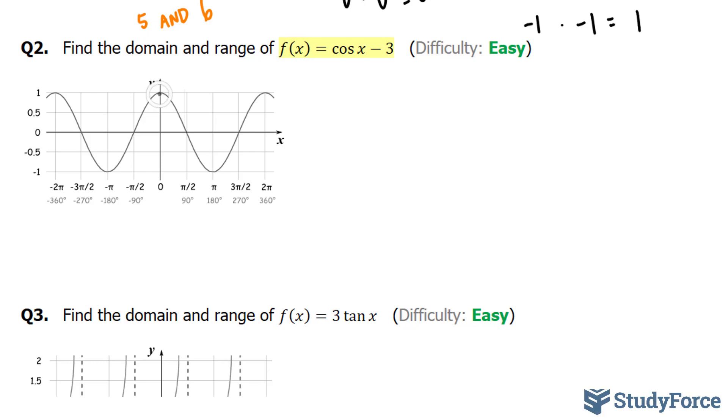Notice that cosine starts at 1, ends at 1, and also dips down to -1. Therefore, our domain, given that this is a continuous function, has to be all real values of x.